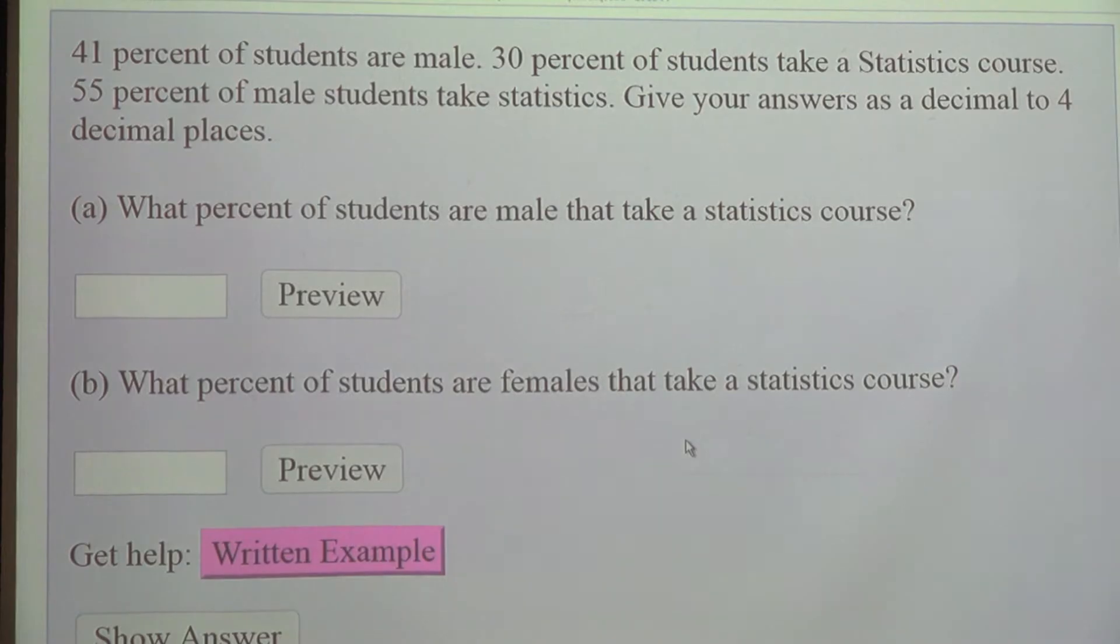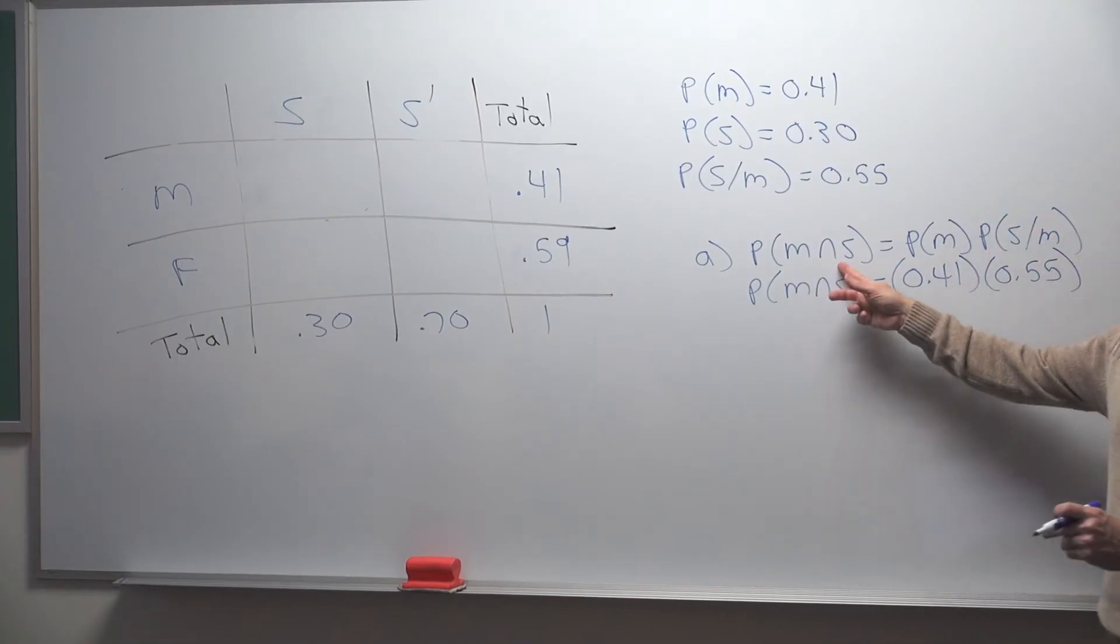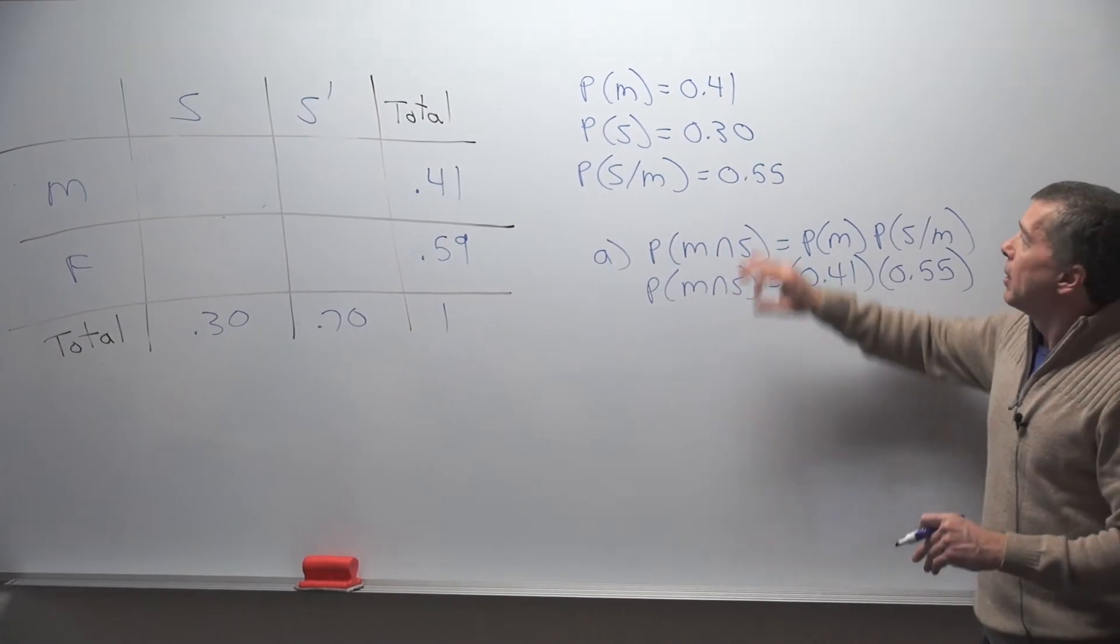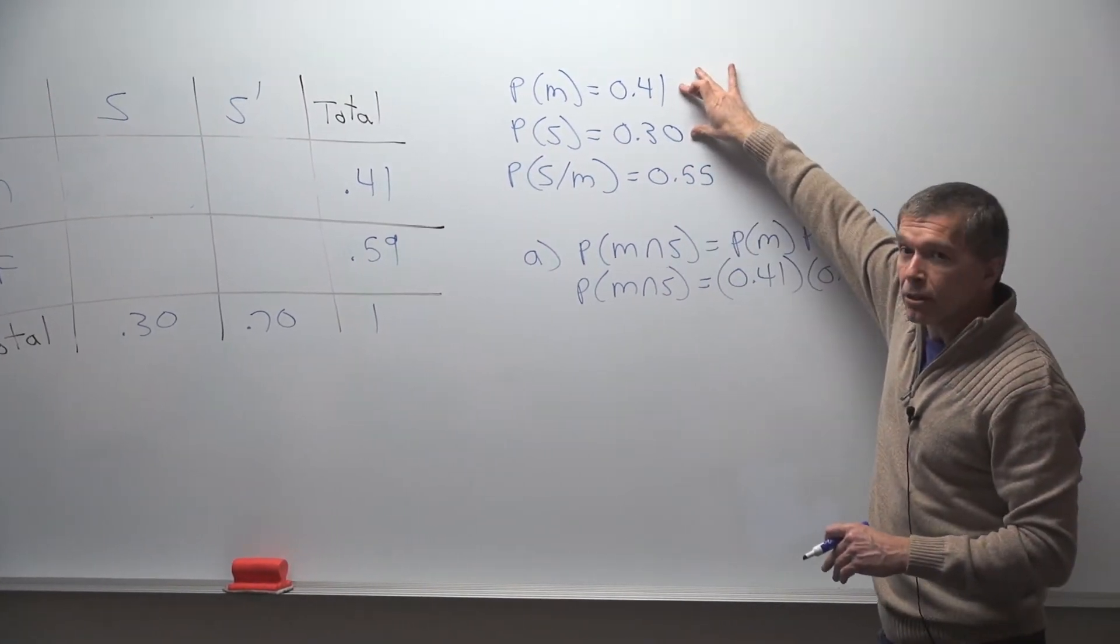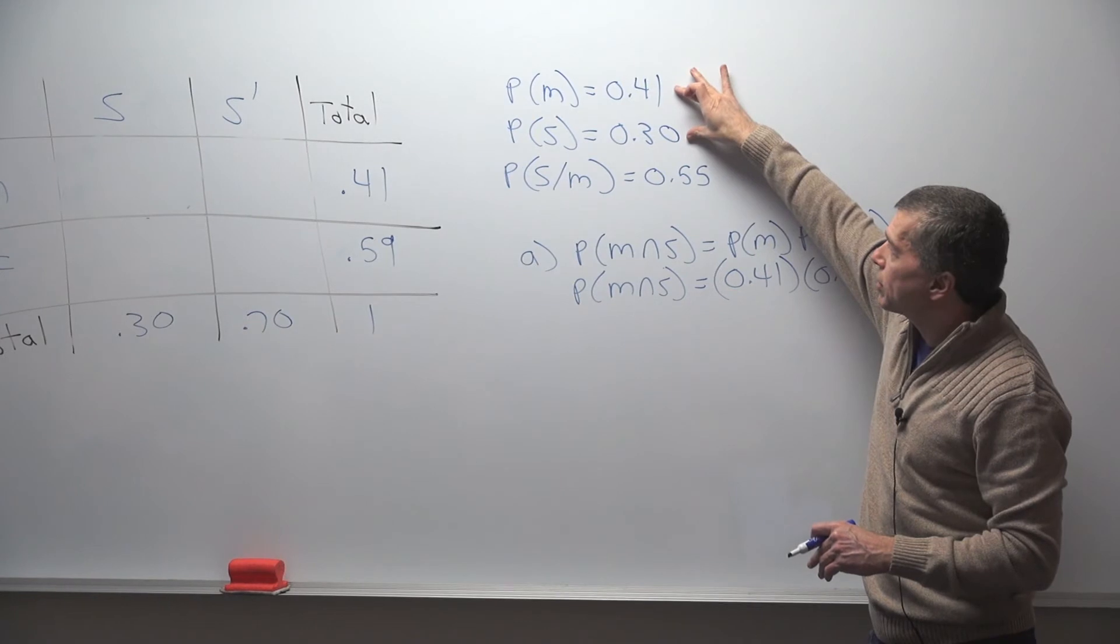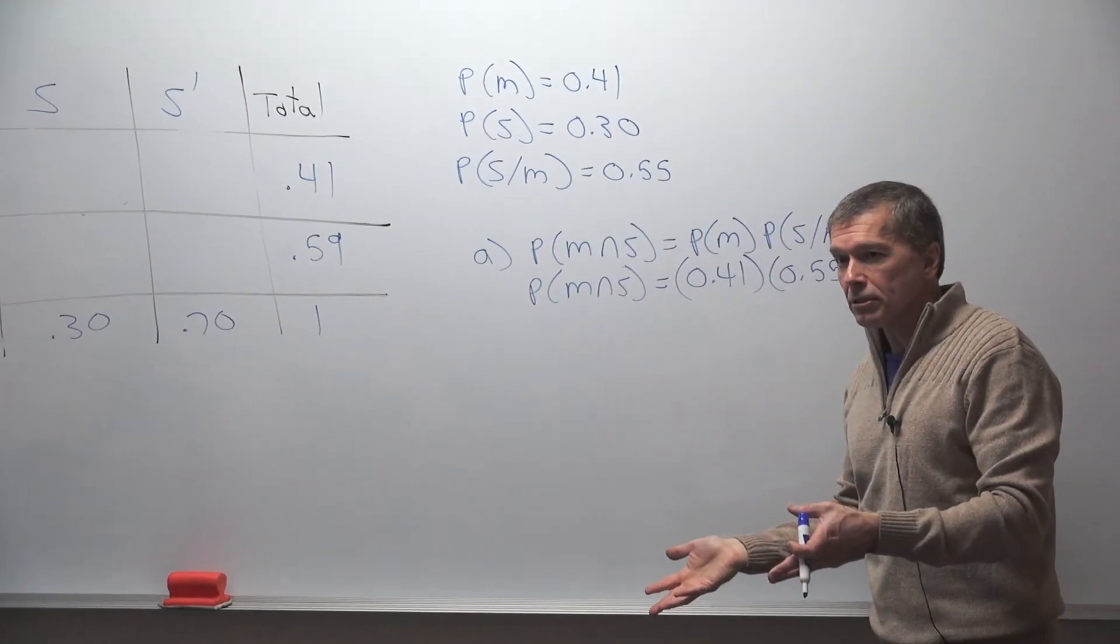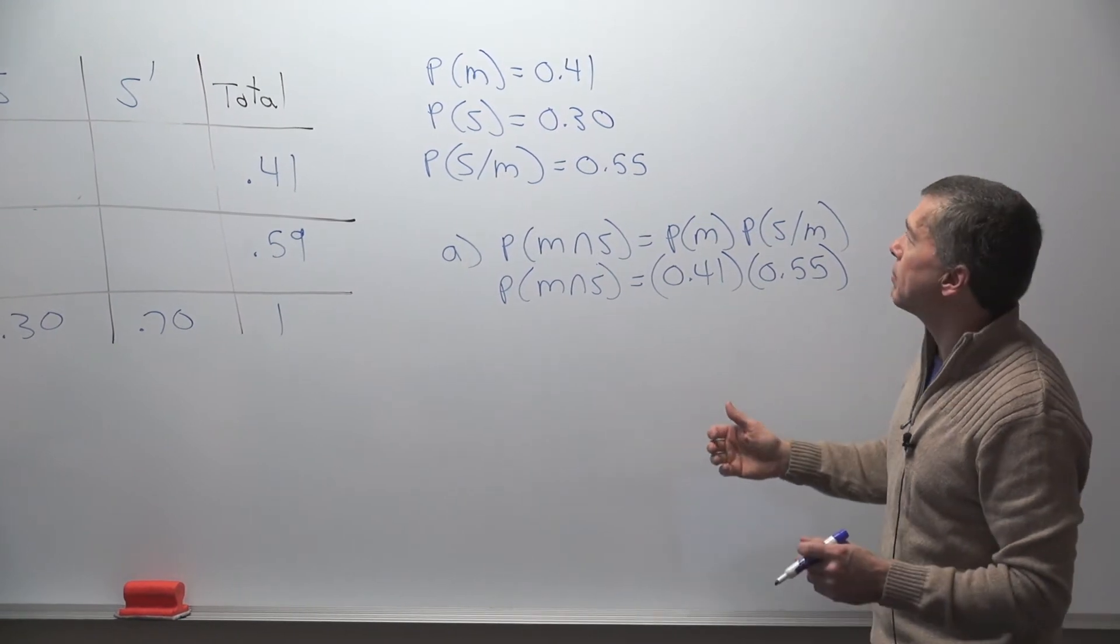On part A, it says what percent of students are male that take statistics? That's confusing because you don't see the word 'and' in there, but it means and. We're looking for students that are male and take statistics. Now to get the probability of male and statistics, you do not multiply these two together. You can only multiply these two together if they would be independent of each other. We don't know if there's just as many males in statistics as females. It's not like flipping coins or something.